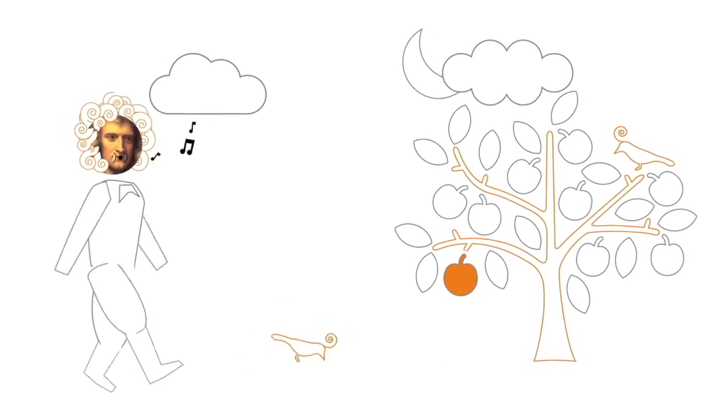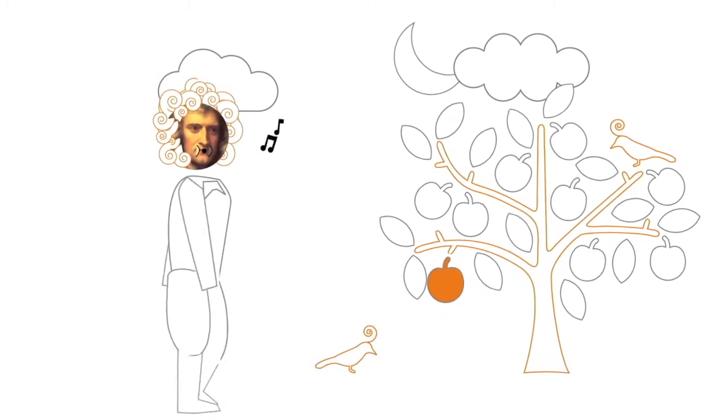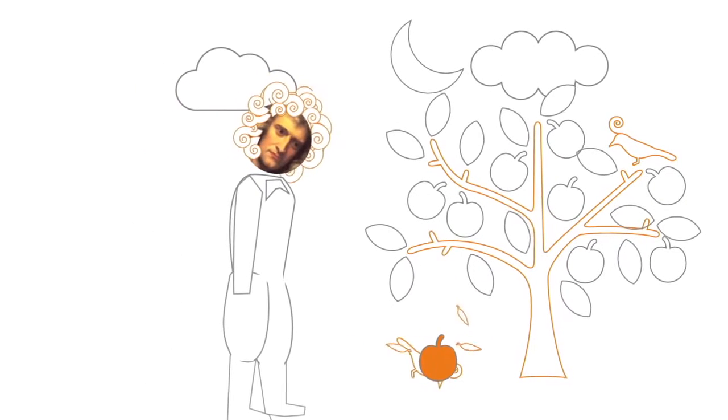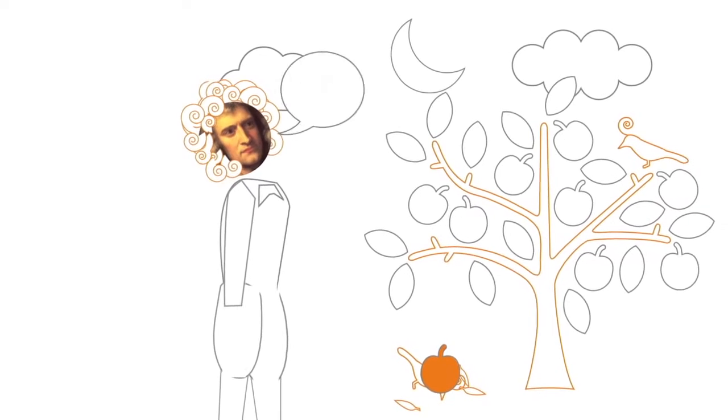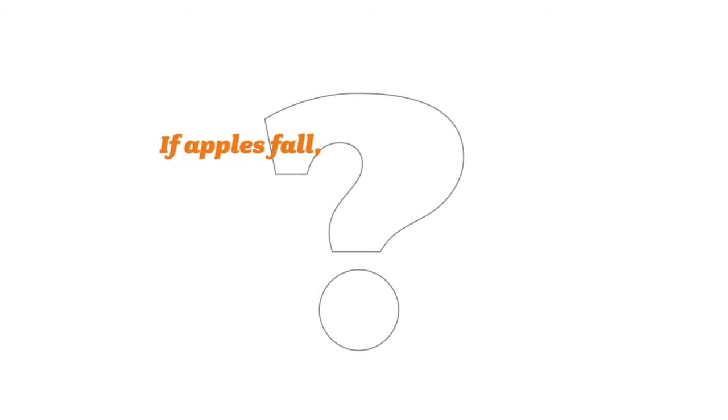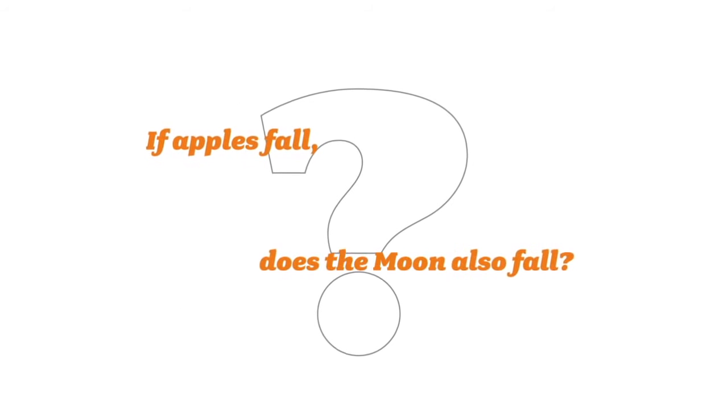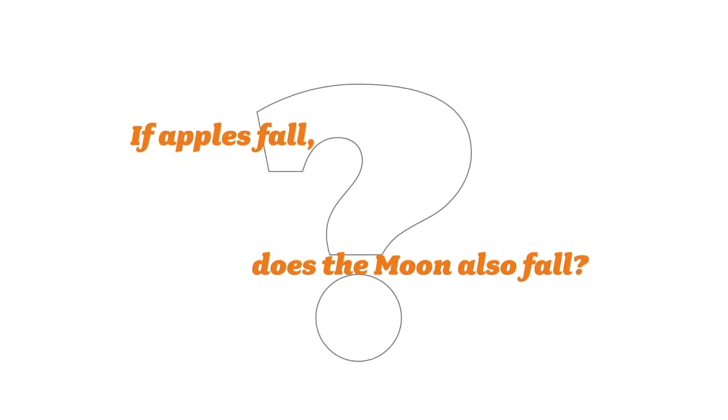According to one story, he was walking on his estate in Wilsthorpe, and he saw an apple fall. And then Isaac Newton saw the moon. And then he asked the key question, which helped to unlock the heavens. If apples fall, does the moon also fall?